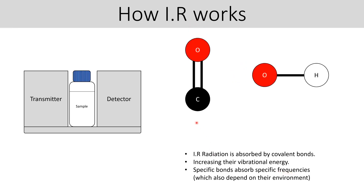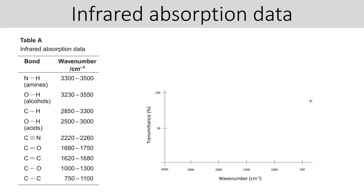It's not always going to absorb exactly the same frequency — that will depend on where the carbonyl is in the molecule and what it's surrounded by. The OH bond is similar: it depends on where it is. If it's the OH of an alcohol, it absorbs slightly differently to the OH of a carboxylic acid.